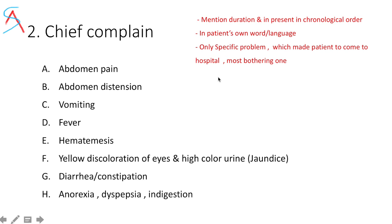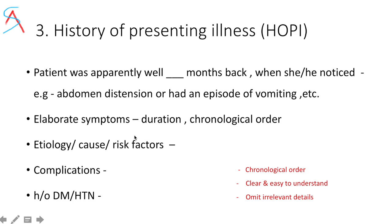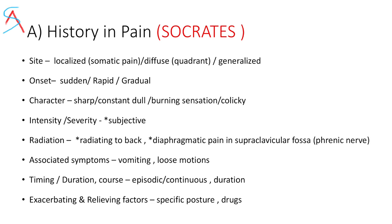Then we present the history of presenting illness. Present it as: the patient was apparently well these many months back when he or she noticed abdominal distension. Elaborate all symptoms with their duration in chronological order. The history should be clear and easy to understand. You can omit irrelevant details — for example, if the patient has decompensated liver disease, omit the history of headache if irrelevant, as adding everything complicates reaching a diagnosis.